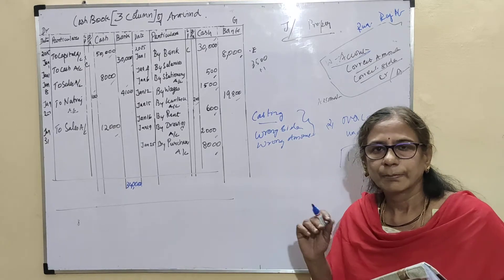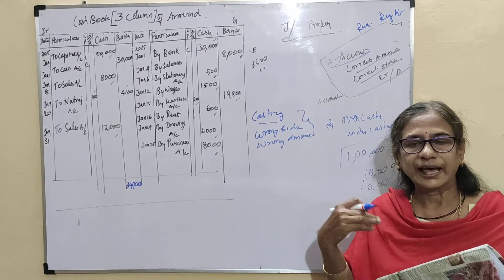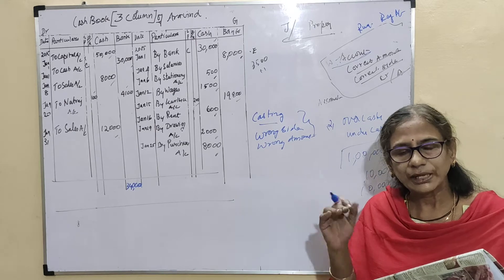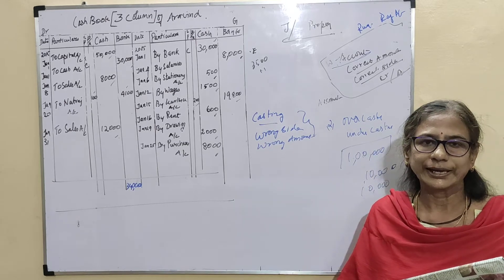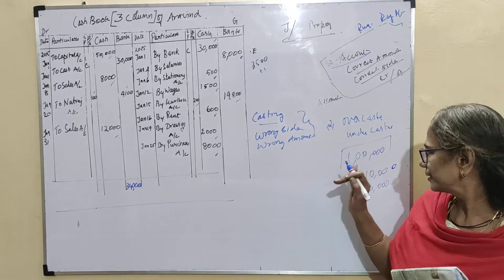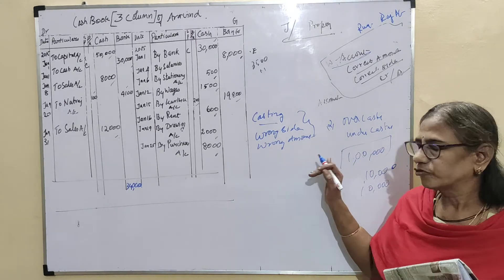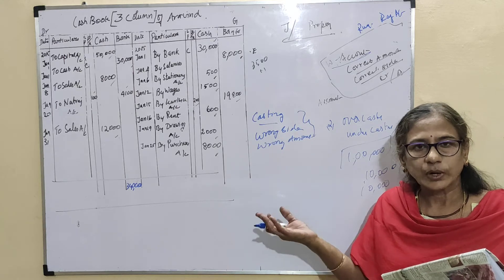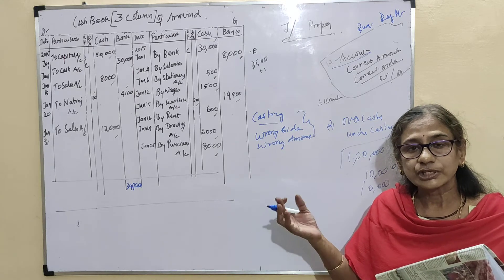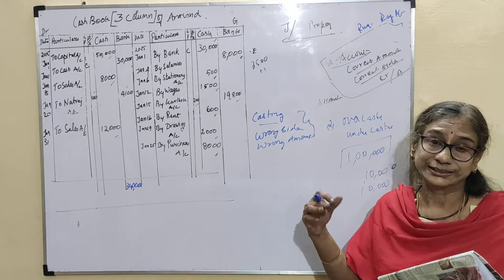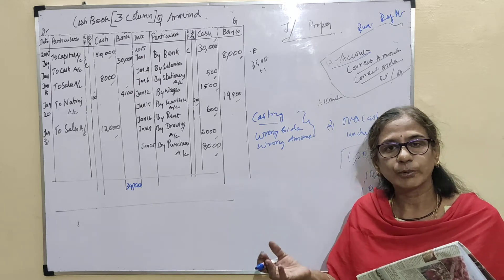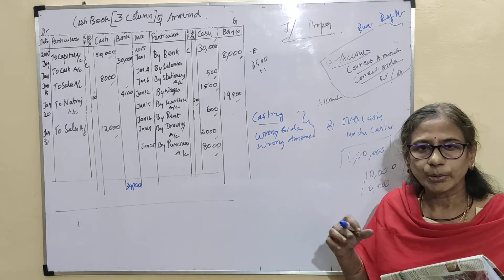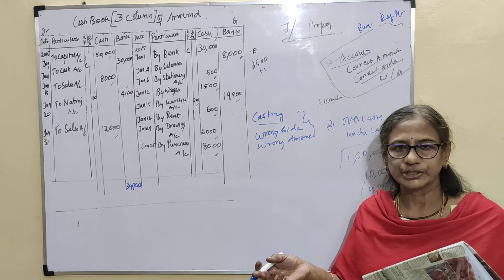In addition to that, balance carried forward to the next page will be wrongly entered. Just like this, instead of 1 lakh 10,000, they might have entered just 1 lakh, or 1 lakh 10,000 maybe entered as 10,000 like that. So, carry forward is also one of the errors of commission.